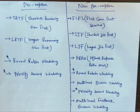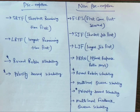Now talking about preemptive and non-preemptive algorithms — the preemptive algorithms we have are: SRTF (Shortest Remaining Time First), LRTF (Longest Remaining Time First), Round-Robin scheduling, and Priority-based scheduling.